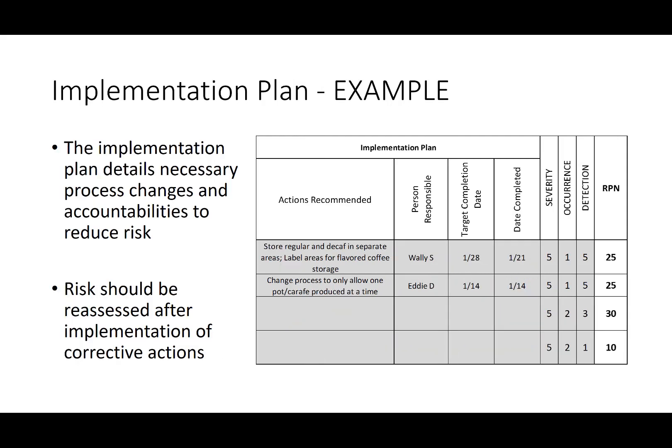The next step is to move into the implementation plan. Since the top two RPNs were the highest, and the bottom two were relatively low risk, only the top two were determined to need action. The implementation plan details the necessary process changes and accountabilities to reduce the risk. In this case, they want to store the regular and decaf in separate areas and label the areas for flavored coffee storage. You'll notice they then identify who is responsible, the target completion date, and once complete, they reassess severity, occurrence, and detection risk. The severity didn't change; however, the likelihood of occurrence goes down substantially to a 1, taking the RPN down to 25. This shows what the risk should look like after reassessment following the implementation of those corrective actions.